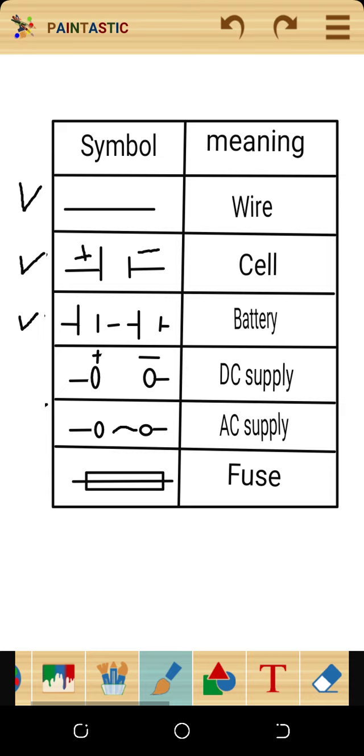The third symbol represents the battery. The function of the battery is to supply electric energy in a circuit. A battery is a combination of two or more cells, or it is a combination of more than one cell.